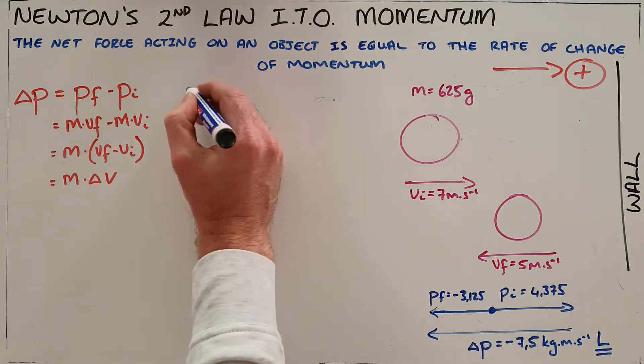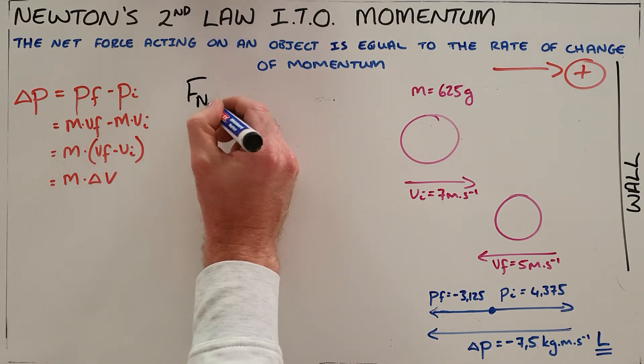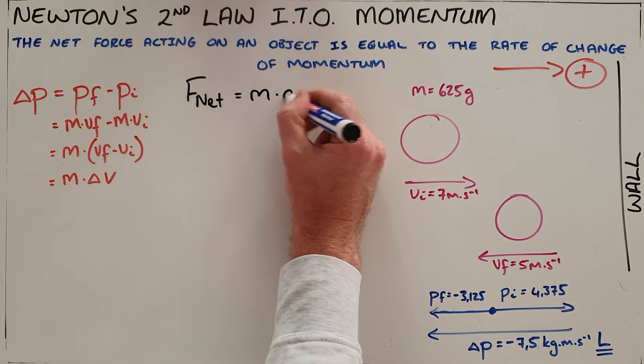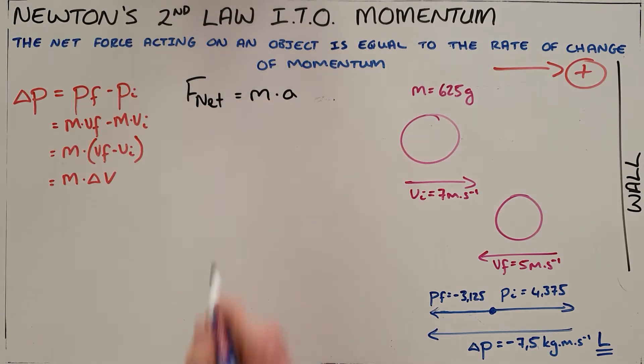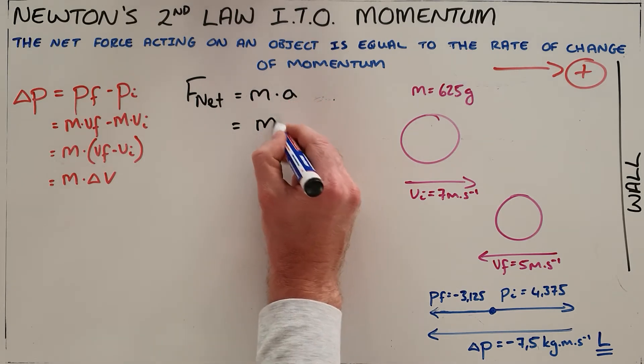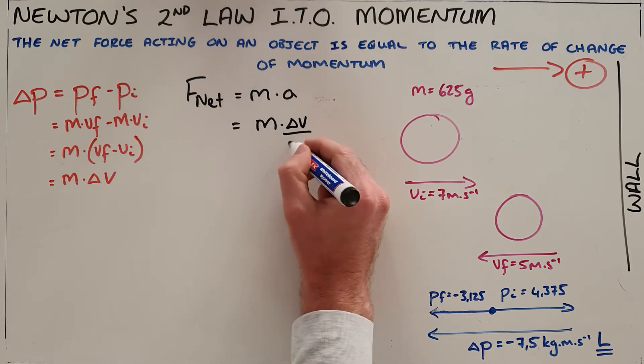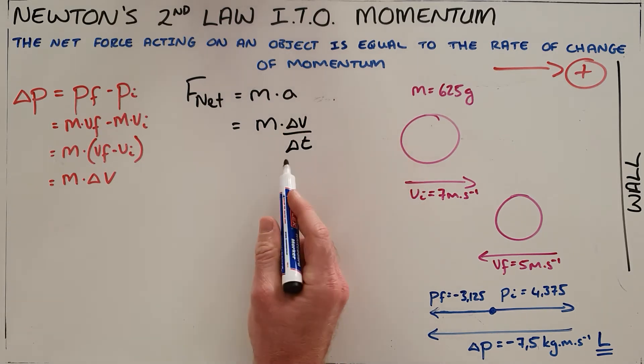Now, we also know that Newton's second law tells us that the net force acting on an object is equal to the object's mass multiplied by its acceleration, where we know that acceleration is very simply the change of velocity over the change in time, which we can call the rate of change of velocity.